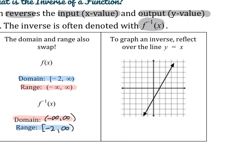Another cool feature of an inverse of a function is that it's always going to be a reflection of the original function over the line y equals x. So it's really easy to graph an inverse if you know what the original function looks like. Here's our original function. First, we need to graph the line y equals x — that's a linear equation with a y-intercept at 0 and a slope of 1.